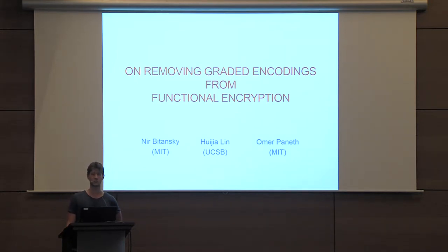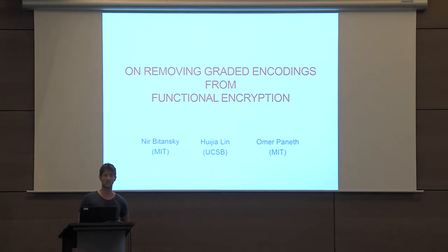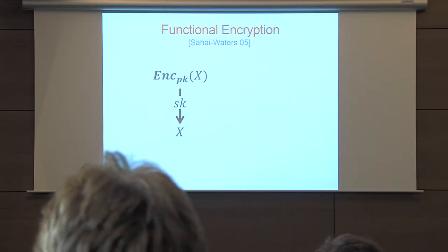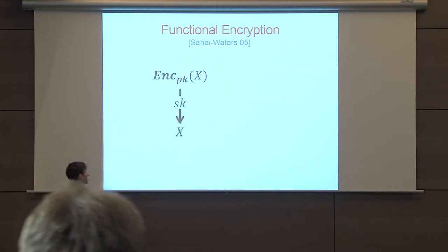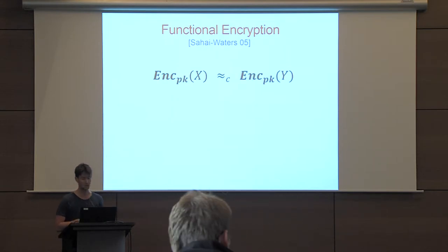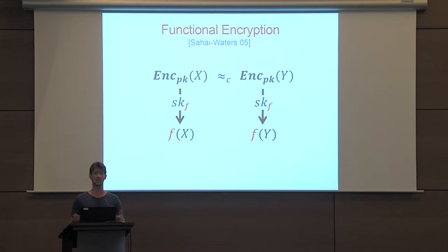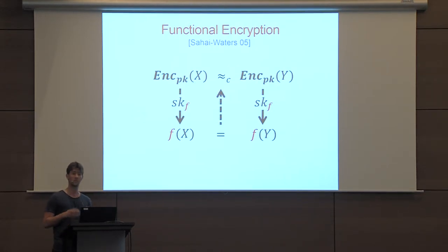I want to tell you how to remove graded encodings or multilinear maps from functional encryption. This is joint work with Rachel Lin and Omer Peneff. In plain encryption, anyone with the public key can encrypt, and if you don't have the secret key, you can't tell an encryption of one plaintext from an encryption of the other. If you have the secret key, you can fully learn the plaintext. In functional encryption, you can also generate partial decryption keys that allow you to learn a specific function of the plaintext. We still require that indistinguishability holds, provided that the function agrees on the two plaintexts.